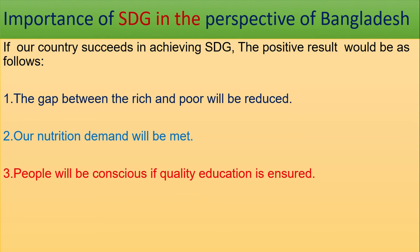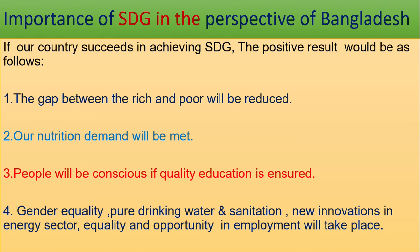Number three: people will be more conscious if quality education is ensured. This consciousness could play a vital role in solving various problems of the citizens. Number four: gender equality, pure drinking water and sanitation, new innovations in the energy sector, and equality and opportunity in employment will take place.